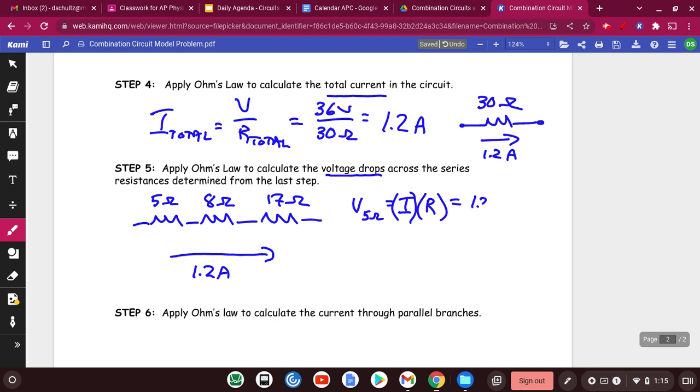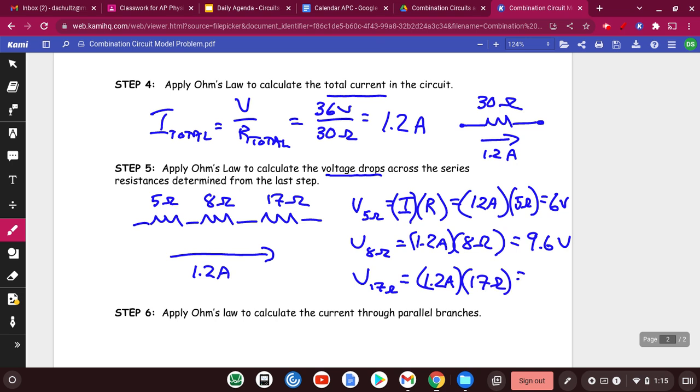So for this first example, for the 5 ohms, we would have a current of 1.2 amps times 5 ohms. That is 6 volts. The next one would be 1.2 amps times 8 ohms. That's 9.6 volts. And the last one, 1.2 amps times 17 ohms, which is 20.4 volts.